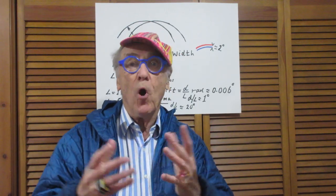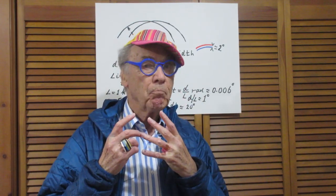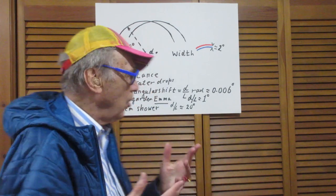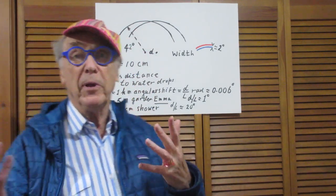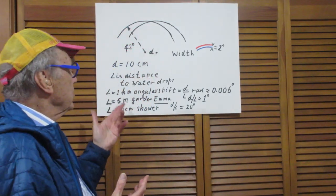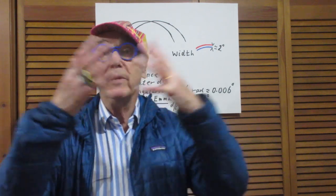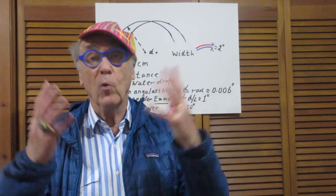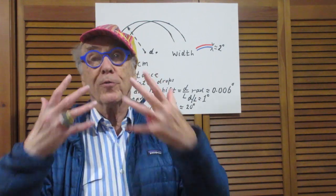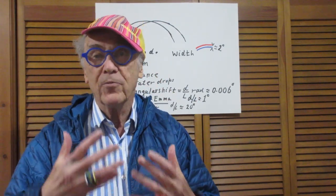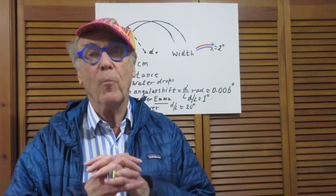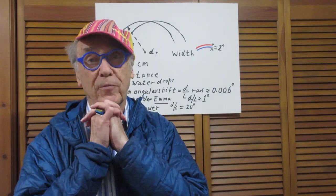So Emma could have come closer to me. That doesn't have to be as close as 30 centimeters. She could have come at a distance to me probably one meter with the rain, with the water, and I still would see two rainbows. Or I could have moved to Emma, so that I would be about one meter from Emma.